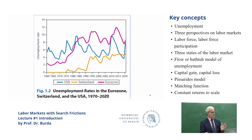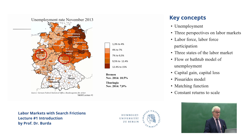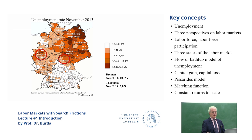Unemployment also has a spatial dimension. This is a map of German labor market administrative districts—the Arbeitsagentur administrative units, each of which has an unemployment rate. The white Kreise are light, so you see Bavaria and Baden-Württemberg in general. If you want to get a job with probability one, get a good training and move to Bavaria. Of course you may have to find a very expensive apartment, but that's one reason why unemployment rates aren't converging. Unemployment is just persistently lower in southern Germany.